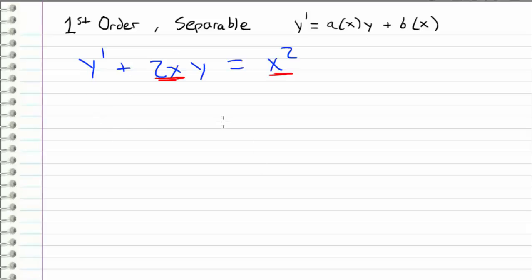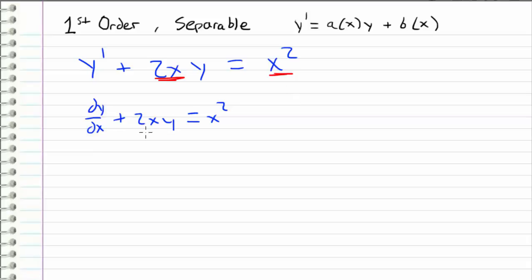So the next thing we have to do is try to separate this differential equation. I'm going to rewrite this as dy/dx plus 2xy equals x squared — I always like to rewrite y prime as dy/dx because it makes it a little easier when we separate variables. So now I'm going to move the 2xy to the other side: dy/dx is equal to x squared minus 2xy.